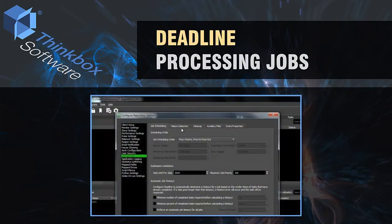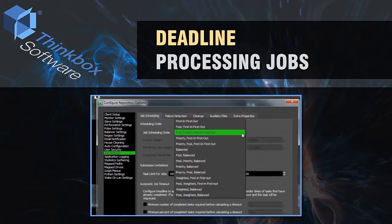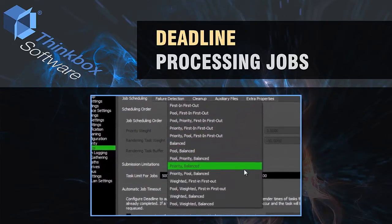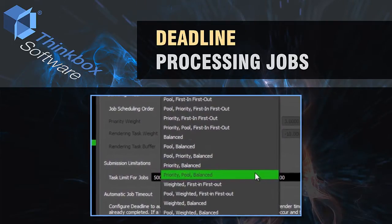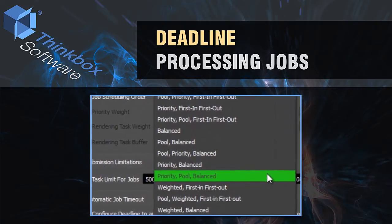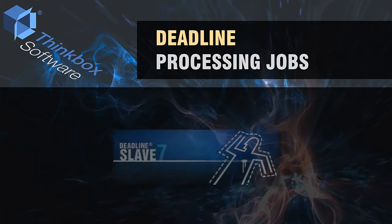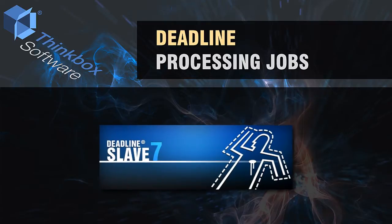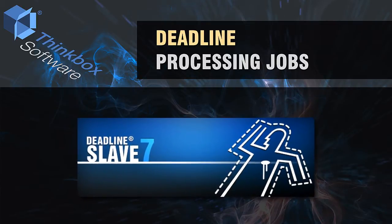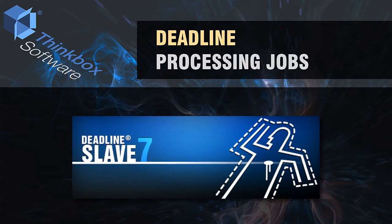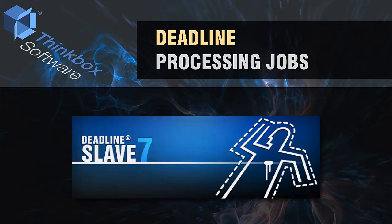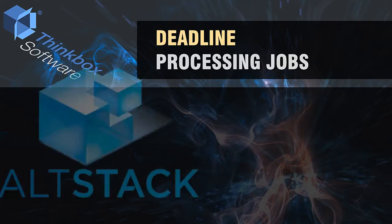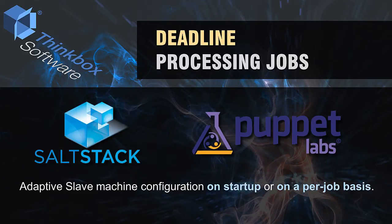Deadline processes work in the queue with a wide variety of configurable scheduling options. Jobs and their tasks can be computed sequentially or in parallel, as specified in the job parameters. The compute or render nodes that process jobs are referred to as slaves in Deadline parlance, and Deadline provides fine-grained control over which slaves can process any given job. Deadline's integrated support for Salt and Puppet software configuration management tools means that software on slave machines can be adaptively configured on slave startup or even on a per-job basis.